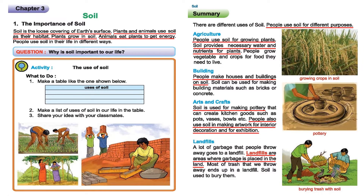In the next page it says there are different uses of soil. People use soil for different purposes. The first purpose is agriculture. People use soil for growing plants. Soil provides necessary water and nutrients for plants. People grow vegetables and crops for food they need to live. Without soil we can't think about our agricultural sector. We know plants and trees grow in the soil and it is quite important for them because soil provides water and nutrients.